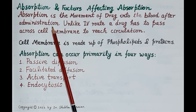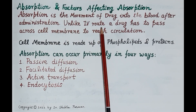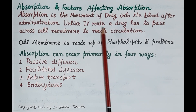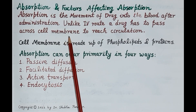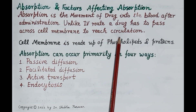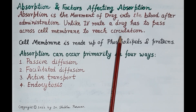Absorption is the movement of drug into the bloodstream after its administration. Unlike the intravenous route where a drug is injected directly into the systemic blood, a drug has to pass across cell membranes to reach blood circulation. For example, if a drug is administered orally and reaches the stomach, it has to pass across the wall of the stomach to reach blood circulation.